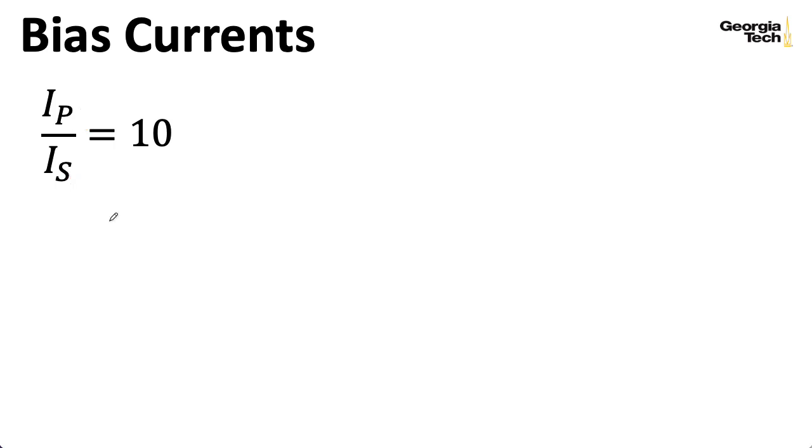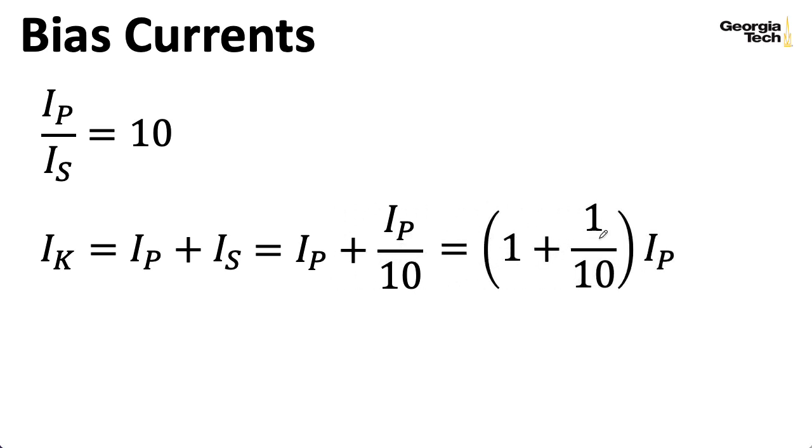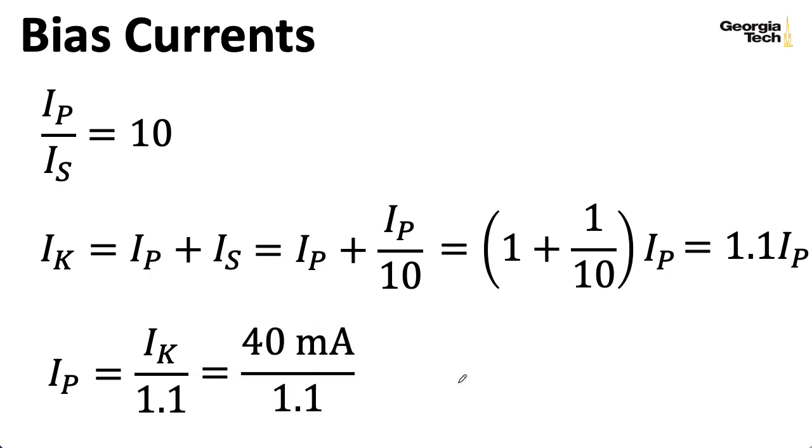Anyway, using that middle column number of IP over IS equals 10, I could say, well, the cathode current is equal to the plate current plus the screen current. And remember, these are all the quiescent current values. They're all comma q kind of quantities. Well, let's take IS and write it as IP divided by 10. I can factor out the IP. I'll write this as 1 plus 1 over 10. So I can say that the cathode current is equal to 1.1 times the plate current. All right, well, I can now figure out what the plate current is by taking the cathode current and dividing it by this 1.1 factor. Well, the cathode current we computed previously was 40 milliamps. So dividing that by 1.1, we come up with 36.4 milliamps.